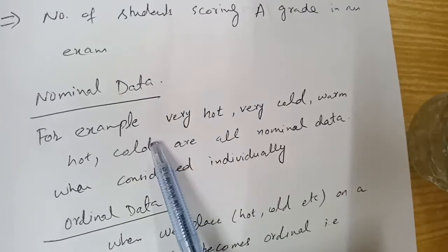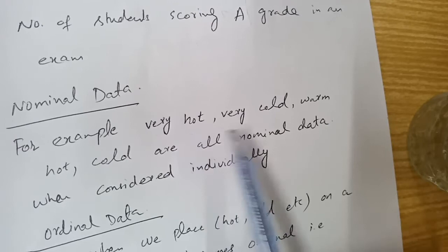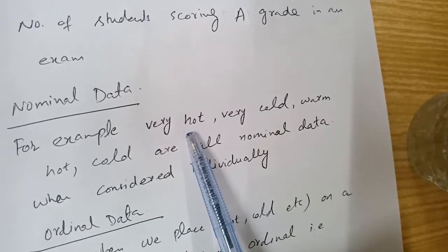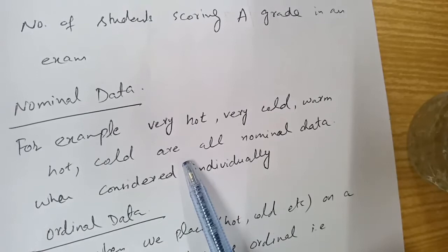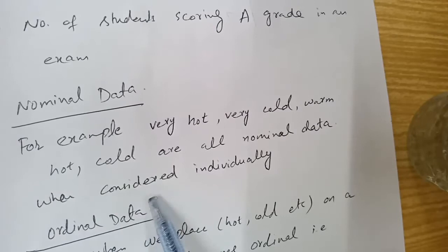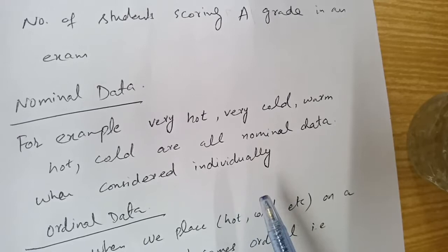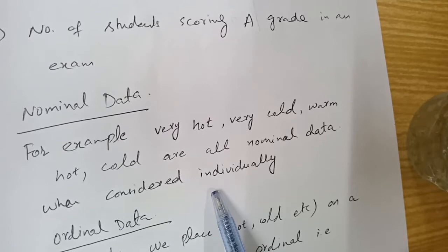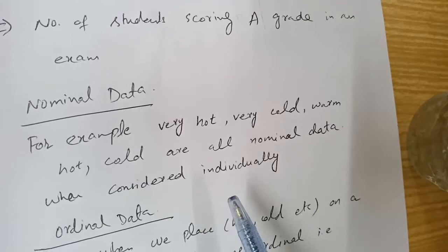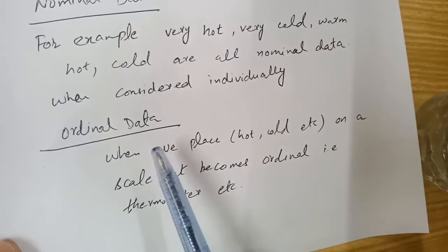For nominal data — the sub-types of qualitative data — for example, we say that this tea is very hot, very cold, warm, hot, or cold. These are all nominal data when considered individually. When you are talking about a single thing — this thing is very hot, this is very cold — you are not caring about order, so this is called nominal data.